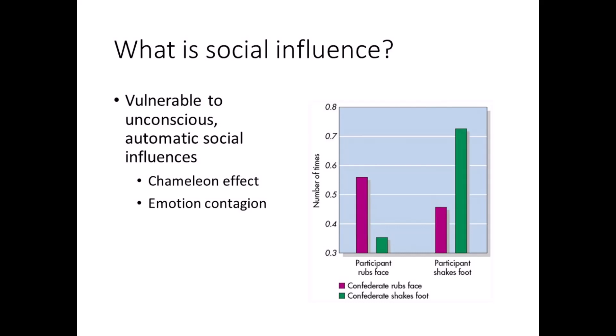There are two broad categories of conformity. Private conformity includes actual changes in both overt behavior and beliefs, long-term changes that remain after the group is gone and the target is alone. It's also known as true acceptance or conversion.